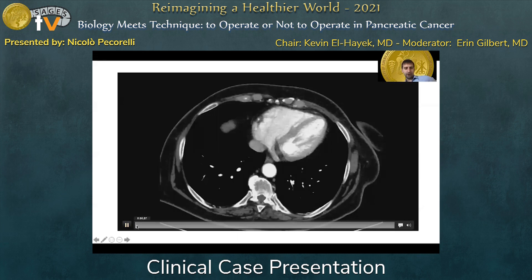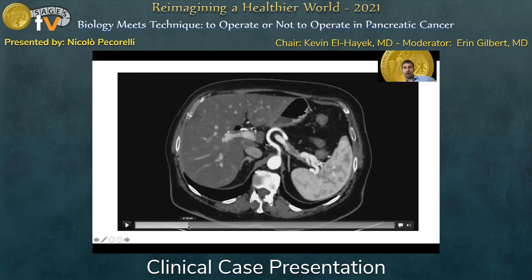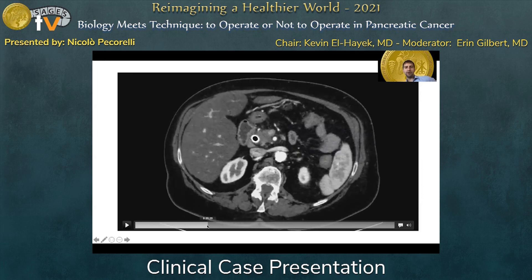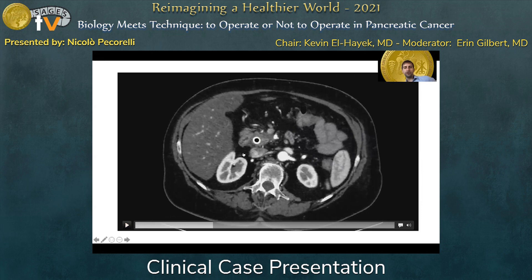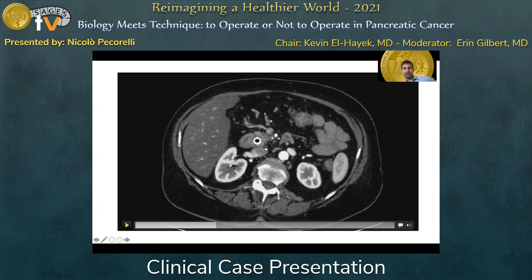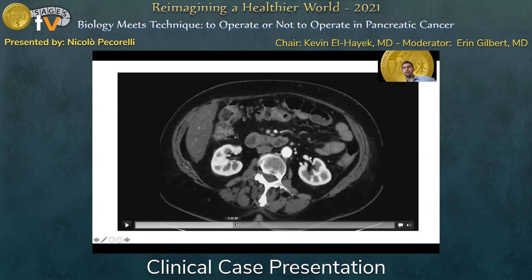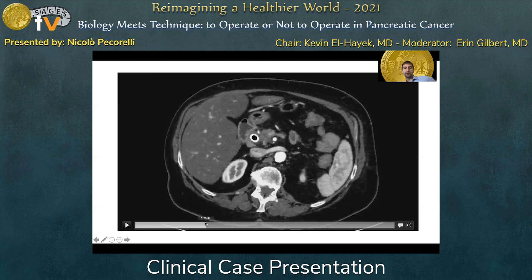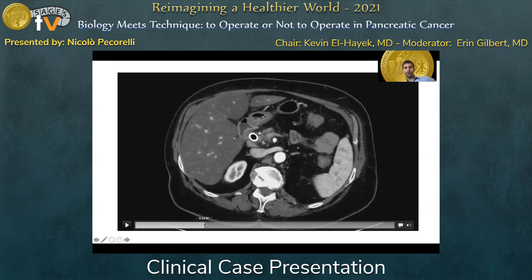Looking at the CT scan arterial phase: the celiac trunk and hepatic artery are absolutely far from the lesion. There is dilation of the main pancreatic duct and here is the tumor. What is really important is the aspect of the superior mesenteric artery, which appears infiltrated on the right side for approximately 180 degrees, though the contour of the artery is not altered. Moving on, the first jejunal branch is definitely involved by the tumor. Below, as the artery moves into the mesentery, it is free — it's a small superior mesenteric artery here. The involvement is pretty lengthy along the SMA, but the origin is absolutely free and far from the tumor.